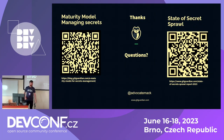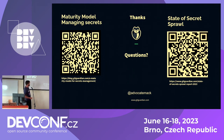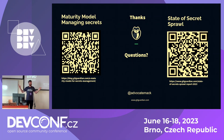That's pretty much it. Here are some QR codes — the State of Secret Sprawl is the report that all this information is in, so you can download that. And there's a white paper on how to manage your secrets and benchmark yourself against other people. Thank you all for coming out early and watching — if you have any questions I'll be glad to take them now. Thanks everyone.